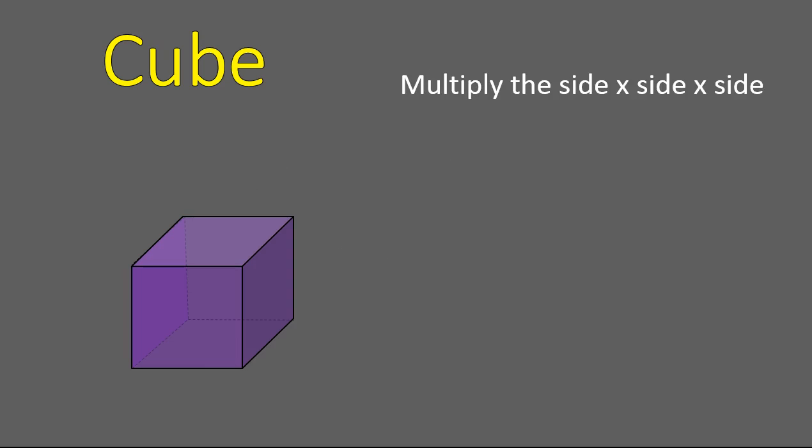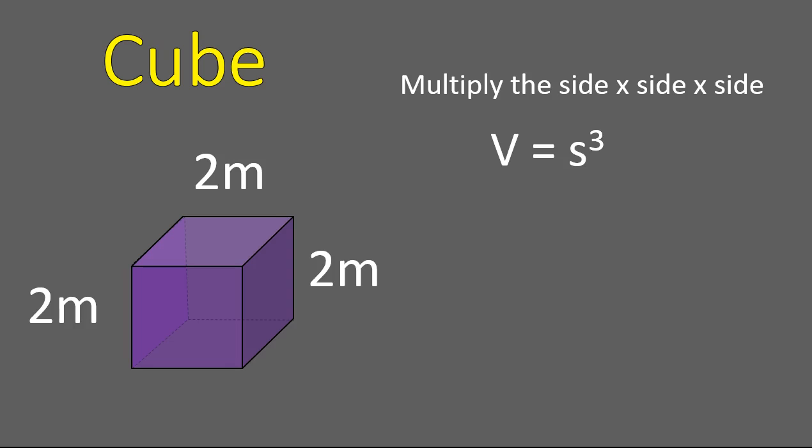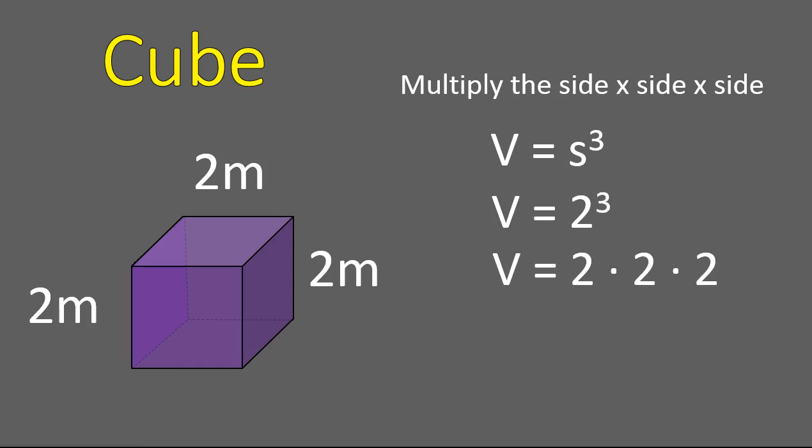The way that we calculate this is to multiply side times side times side. We won't usually label all three sides — length, width, height — because they're all the same. The volume is calculated by taking the side measurement and raising it to the power of three. That is called cubing it. So it's the side cubed. Two to the power of three, or two cubed, is two times two times two, which gives you eight cubic units. The volume of a cube: take the side length and multiply it times itself three times — cube it, or raise it to the power of three.